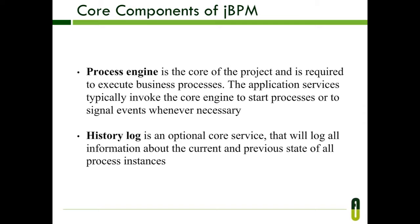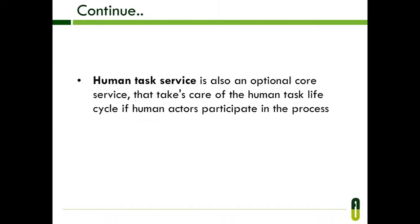Now we are going to look at the core components of JBPM. The process engine is the core of the project and is required to execute business processes. Application services typically invoke the core engine to start processes or to signal events whenever necessary. The history log is an optional core service that will log all information about the current and previous state of all process instances. The human task service is also an optional core service that takes care of the human task life cycle if human actors participate in the process.